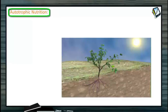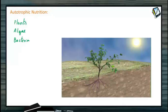Autotrophic nutrition is performed by plants, some algae, and bacteria. The organisms which synthesize their own food from simple substances to complex substances like carbohydrates is called autotrophic nutrition. They are able to synthesize their own food and are not depending on other organisms.